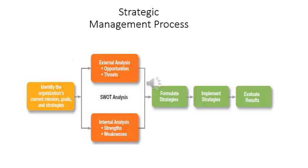We will move to the second point in our topic, which is the five steps of the strategic planning process. The process of strategic planning consists of five steps. Number one, identifying the current situations, the goals, the strategies, and the mission.